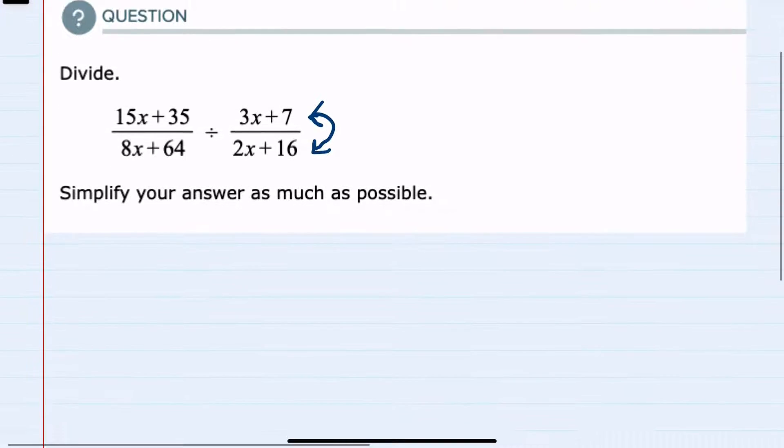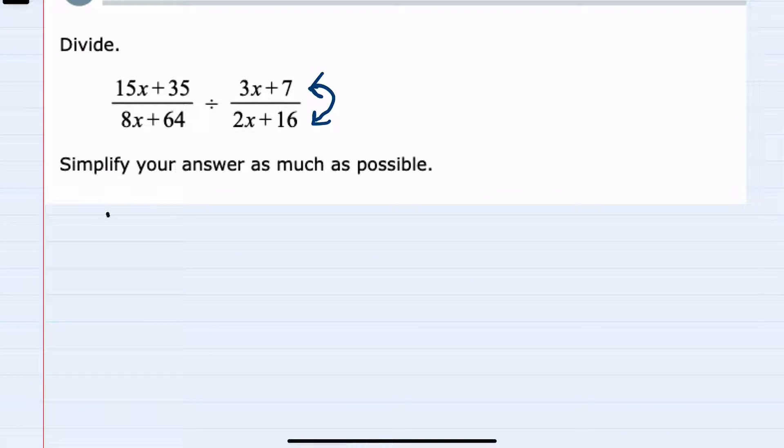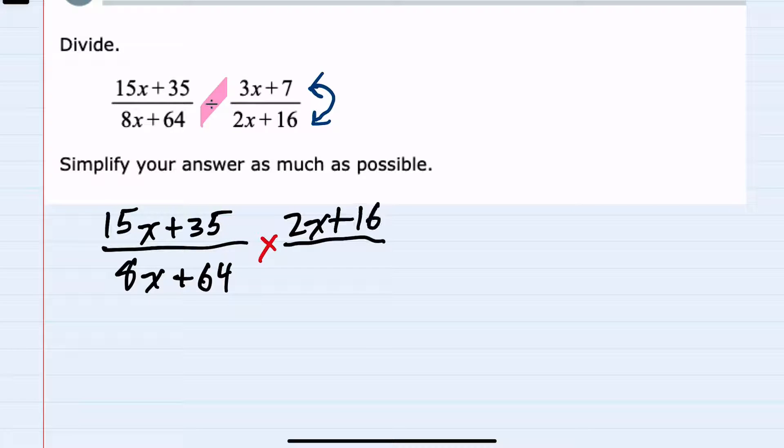So to rewrite from the beginning, our first fraction stays the same. We turn division into multiplication by taking the reciprocal or flipping the second expression. So the 2x plus 16 moves to the top and the 3x plus 7 moves to the bottom.